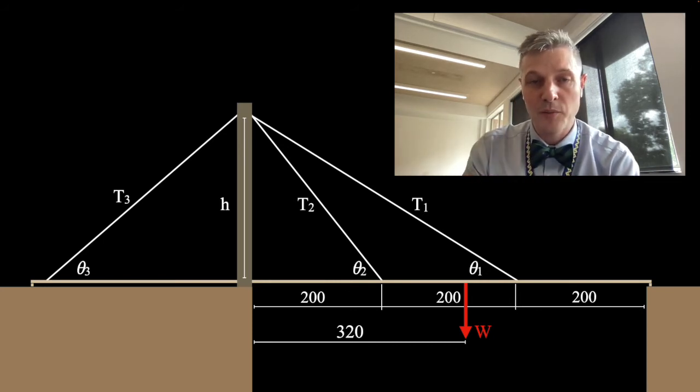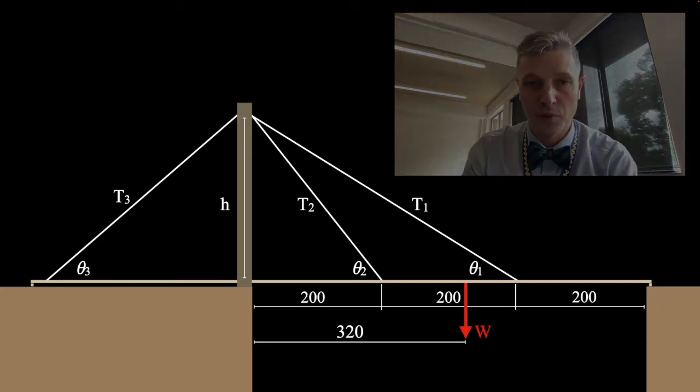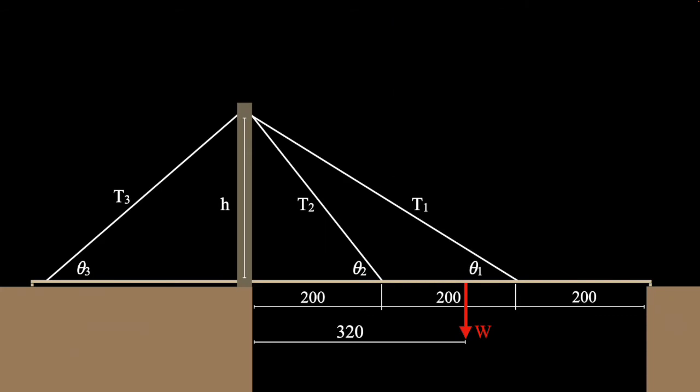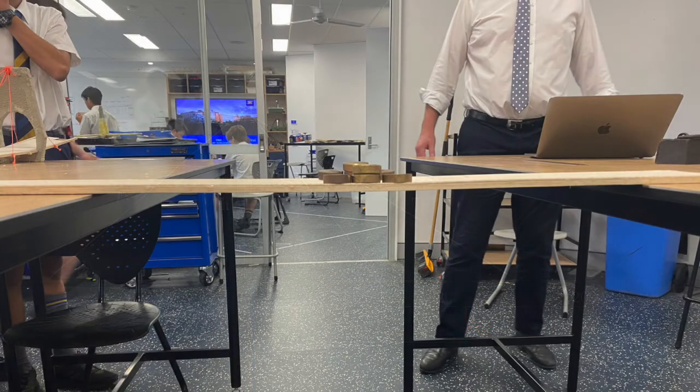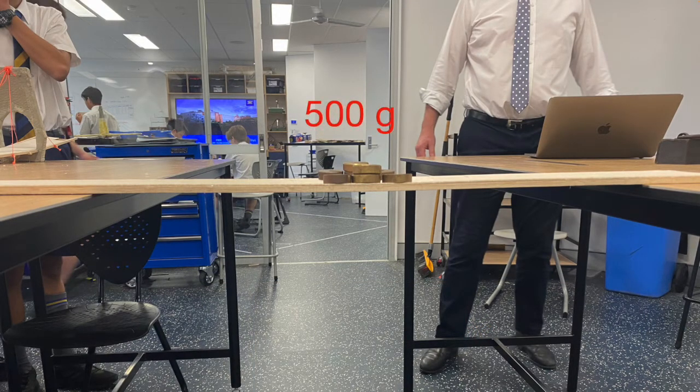Now we're actually trying to figure out how much of this weight is being transferred as tension through those cables. Problem is our deck will actually be able to hold some weight even without the cables, and what I found was roughly the number of mass that it could actually hold without bending was about 500 grams. So beyond 500 grams, that's when the tension starts to be applied through the cables.